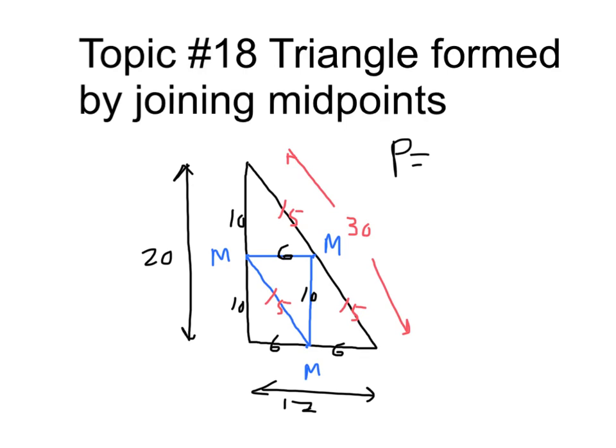So the perimeter of the outside triangle is 30 and 20 and 12 at 62. For the large triangle, the perimeter of the small triangle is half the size.